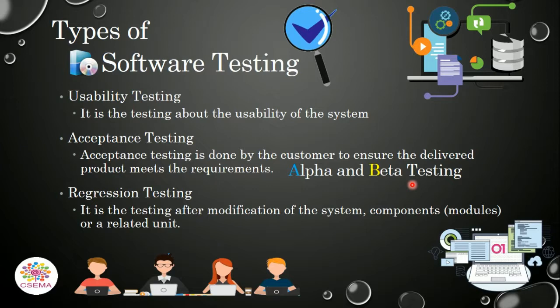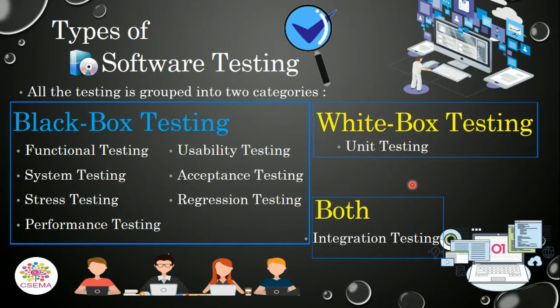Regression testing is the testing performed when any modifications are made to the system, such as updates or changes to a component, module, or related unit. All these types of testing can be grouped into three categories: the first one is black box testing.